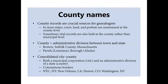Counties are crucial to understand because their records are so important to genealogists. In most US states, court, land, and probate records are maintained at the county level. The county is the administrative division between the town and the state — for example, Boston in Suffolk County in Massachusetts. In the United States there are two exceptions: Louisiana has civil parishes, and Alaska has boroughs. You may also come across a consolidated city-county where the municipal corporation and the administrative division share coterminous borders — examples include New York City, New Orleans, Denver, and Washington DC.